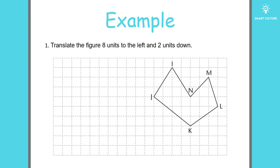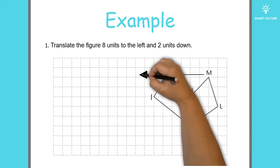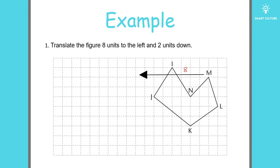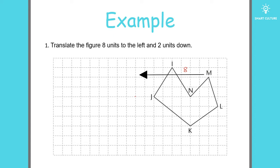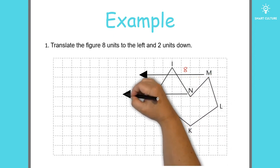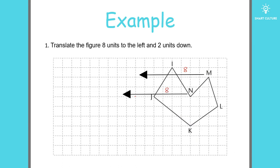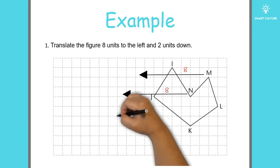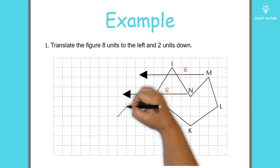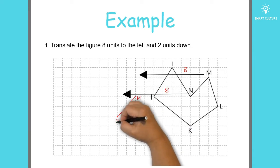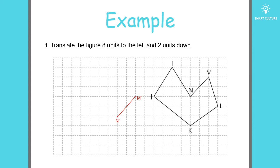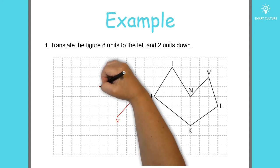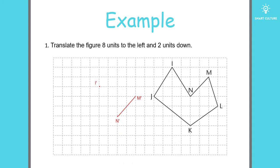We basically have to slide this figure eight units to the left and then two units down. Let's start with point M — we slide it eight units to the left and two units down. Then we take point N and slide it eight units to the left and two units down, then connect these two points. Next we focus on point I: eight units to the left, two units down.